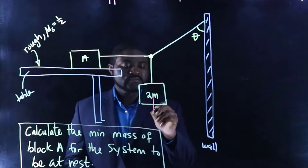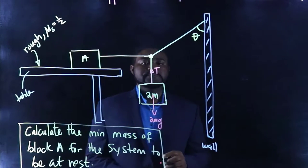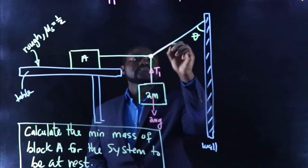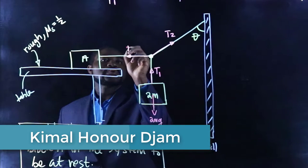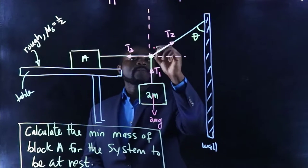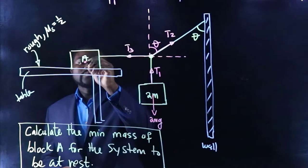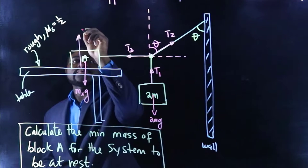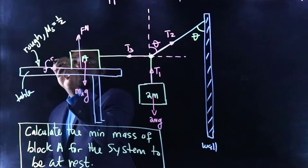We have 2MG, T1, T2, and T3. This angle is theta. We have MxG, Fn, and Fs.